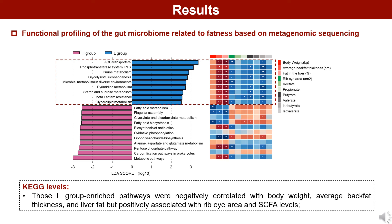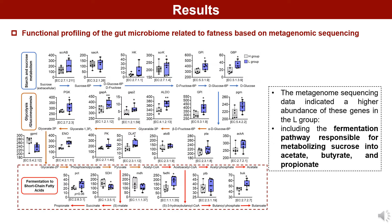For the functional profiling of the gut microbiome related to fatness based on metagenomic sequencing, we found that L group-enriched pathways were negatively correlated with body weight, average back fat thickness, and liver fat, but positively associated with ribeye area and SCFA levels. Most importantly, the metagenome sequencing data indicated a higher abundance of genes in the L group, including the fermentation pathway responsible for metabolizing sucrose into acetate, butyrate, and propionate.